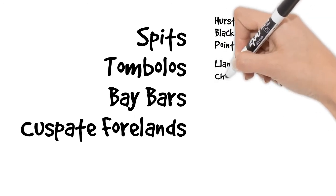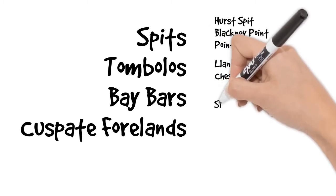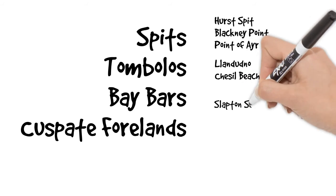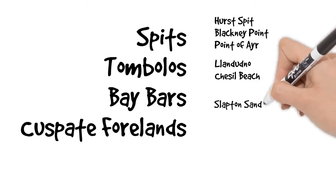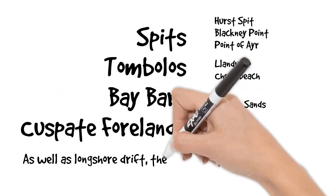Tombolos: the classic one is Llandudno in North Wales or Chesil Beach in Dorset. Bay bars: excellent example of a Bay bar, Slapton Sands in Devon. And Britain's largest Cuspate Foreland, Dungeness on the Kent coast.